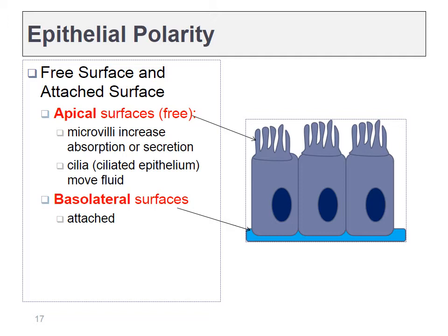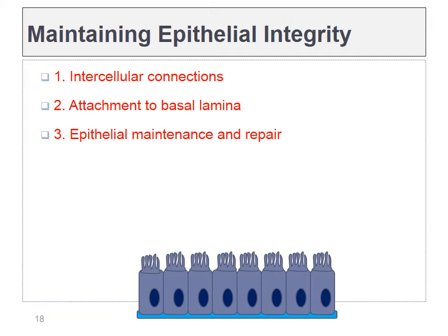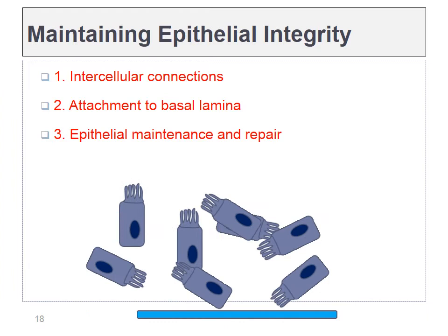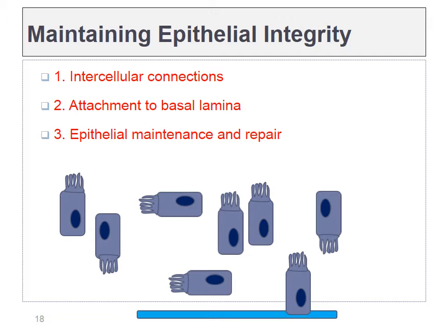Epithelia have polarity — different sides — and rather than saying top and bottom, we say apical and basolateral. The apical surface is always the free surface, while the basolateral surface is always attached to a deeper tissue. To maintain the sheet, we need cells anchored to one another with no gaps, so we'll have intercellular connections, a basement membrane, and cell division. Without these three things, we just have a bunch of cells, not an organized barrier.